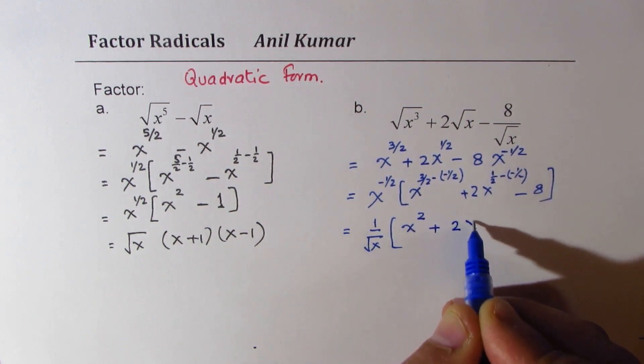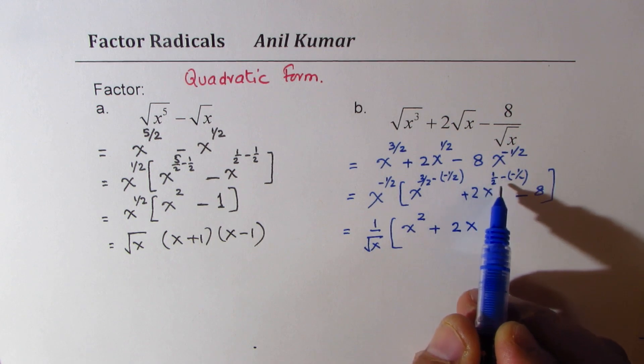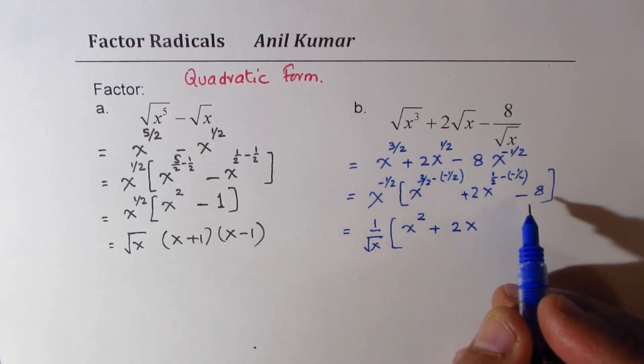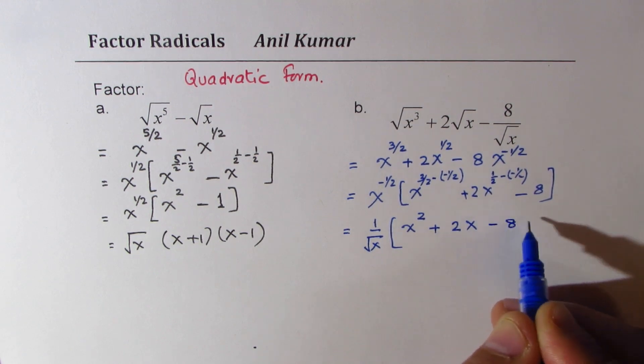Plus 2 x to the power of half, minus, and minus becomes plus, so it is x. And here we have minus 8.